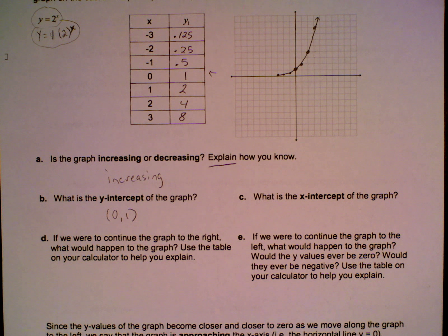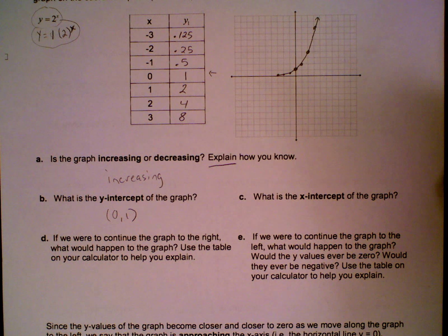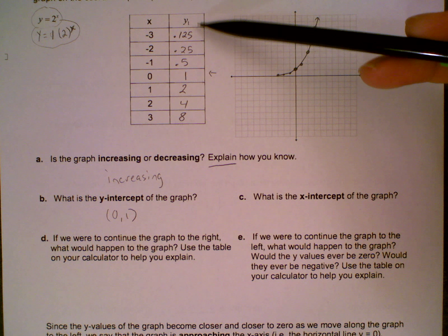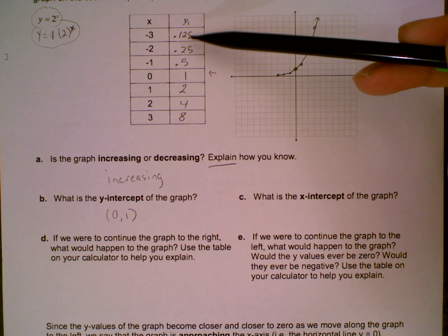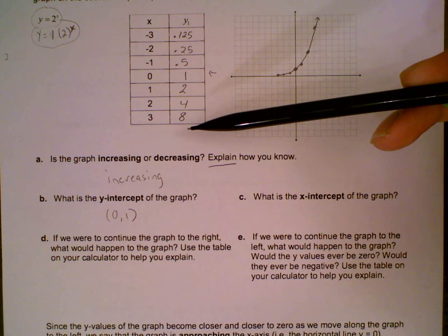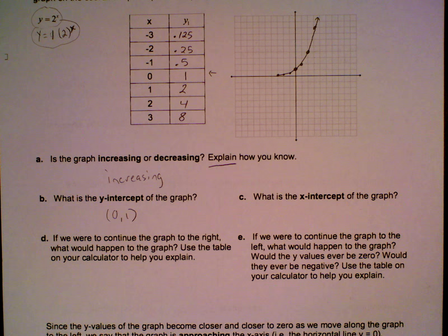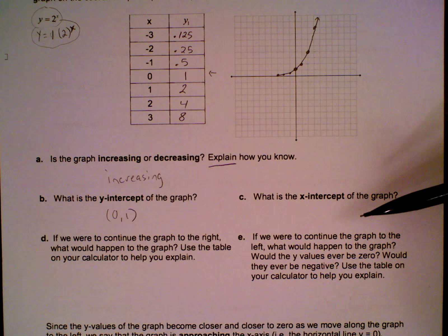Question c, what is the x-intercept of the graph? Okay, this is when we want to see where it crosses the x-axis. Alright, since we look at our table, we want to see where this is 0. It never actually hit 0 in our table. And in our graph, we can't actually see where it crosses that line. So let's skip that question. We are definitely going to come back to it.